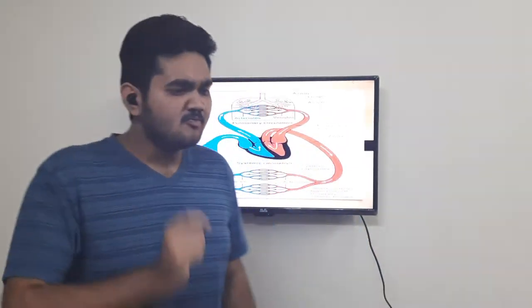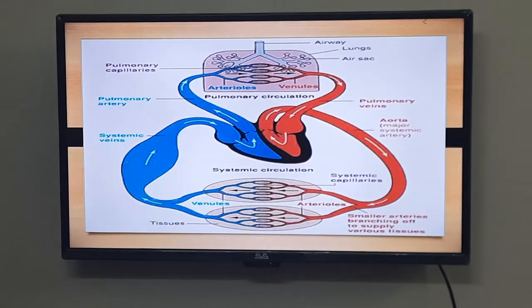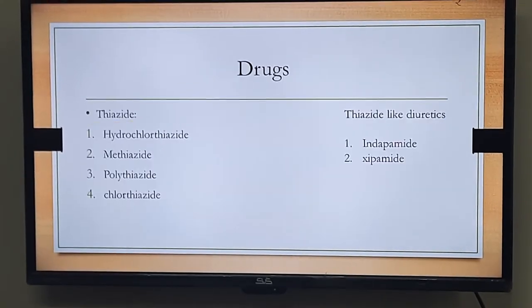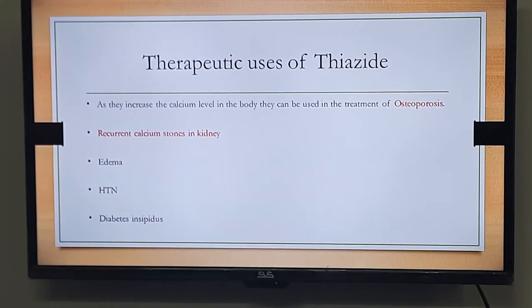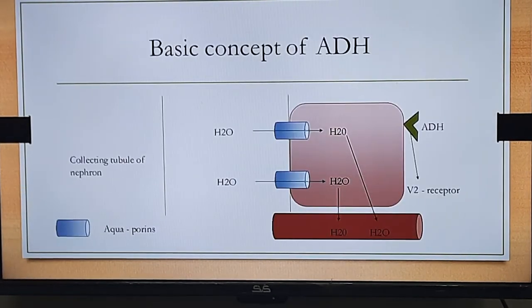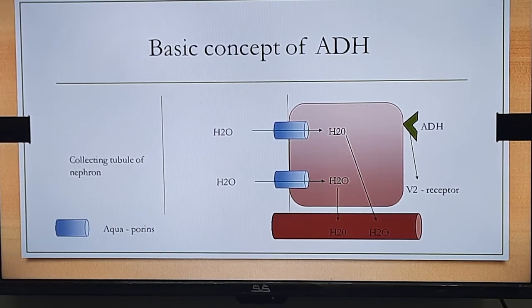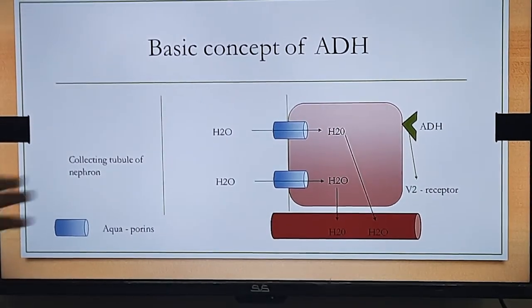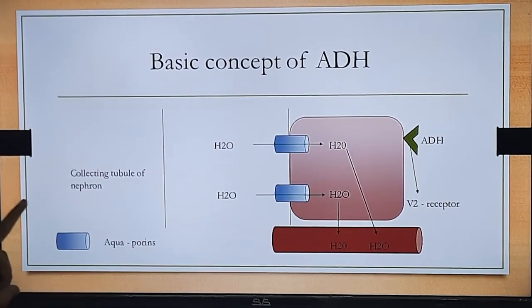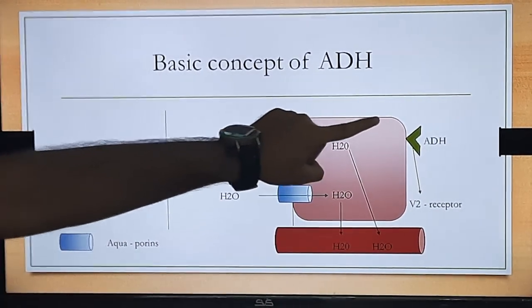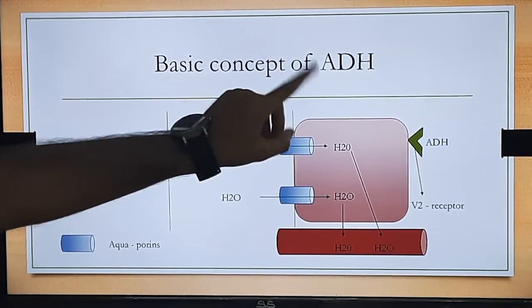Moving on to the next important concept — thiazide diuretics can be used in a condition known as diabetes insipidus. As you can see on screen, diabetes insipidus is related to anti-diuretic hormone (ADH). This represents the collecting tubule of our nephron, where cells have a very important receptor for binding ADH.